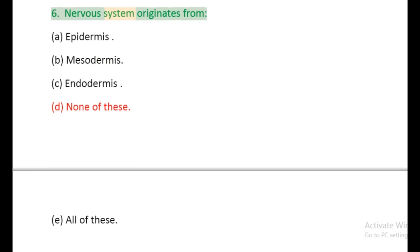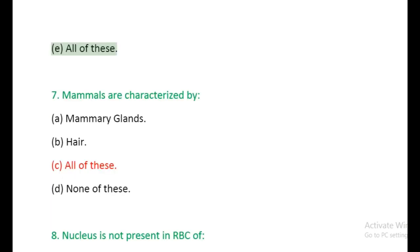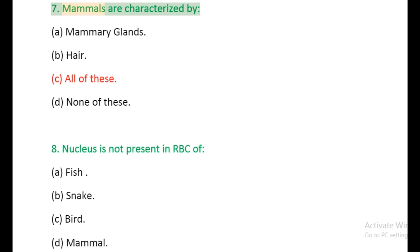Question 6: Nervous system originates from: (a) Ectodermis, (b) Mesodermis, (c) Endodermis, (d) None of these. Question 7: Mammals are characterized by: (a) Mammary glands, (b) Hair, (c) All of these, (d) None of these.